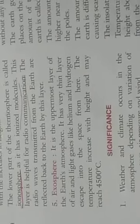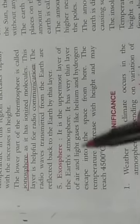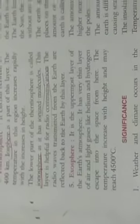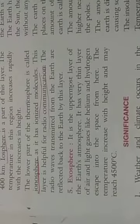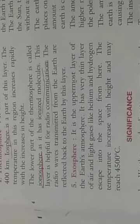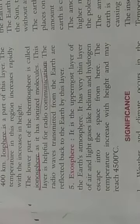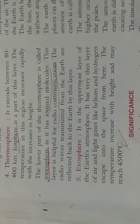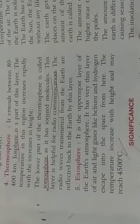The fifth and last layer is the Exosphere. It is the uppermost layer of the Earth's atmosphere. It is a very thin layer of light gases. Helium and hydrogen escape into space from this layer. The temperature increases with height and may reach up to 4500 degrees Celsius.